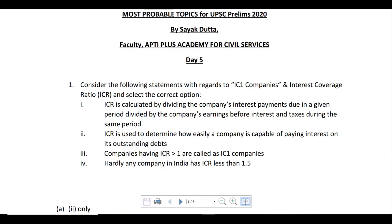The first question is: consider the following statements with regard to IC1 companies and Interest Coverage Ratio, or ICR. You have been provided with four statements. The first statement says ICR is calculated by dividing the company's interest payments due in a given period by the company's earnings before interest and taxes — EBIT — during the same period.